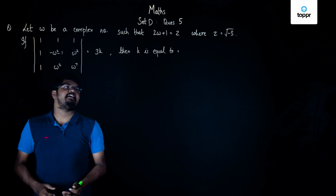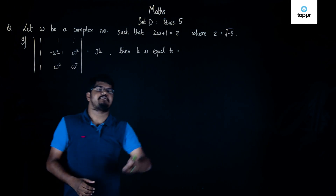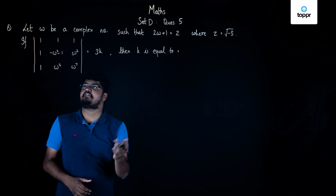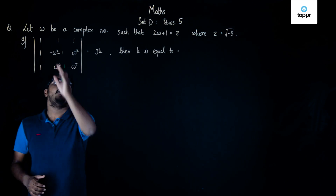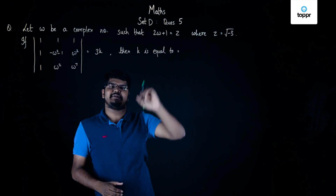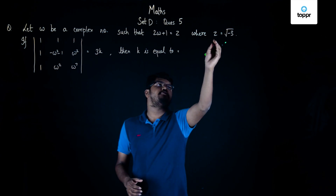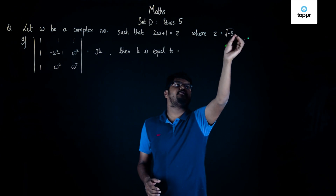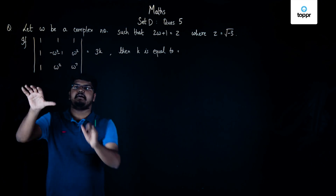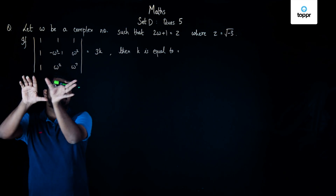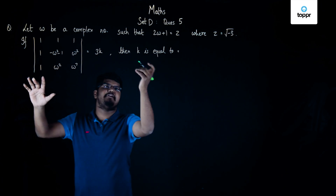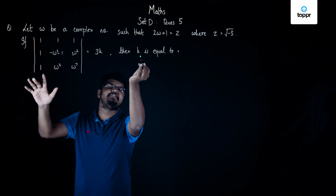Hi guys, let's see now the solution of question number 5 of ZD mathematics. The question is: let omega be a complex number such that 2 omega plus 1 is equal to z, where z is equal to the square root of minus 3. We've been given that the value of the determinant is equal to 3k and we have to find the value of k.